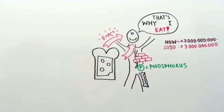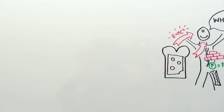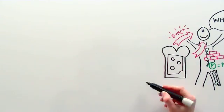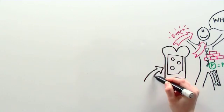Let's check out a cheese sandwich. You eat it for energy and building blocks, such as phosphorus. But where does that come from?